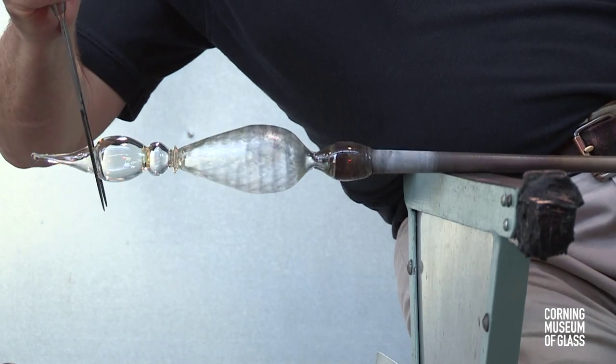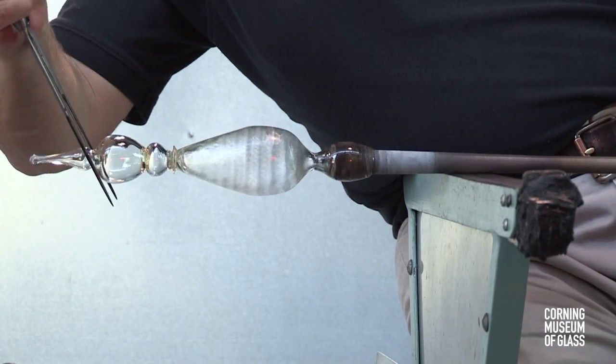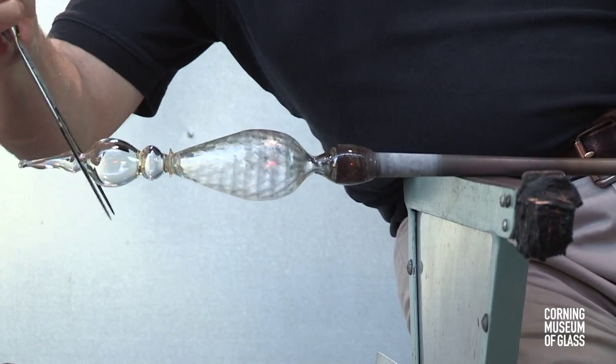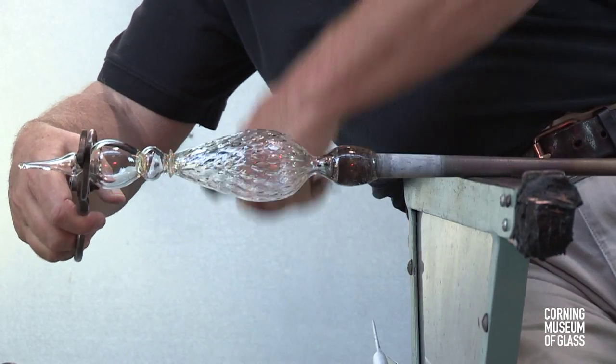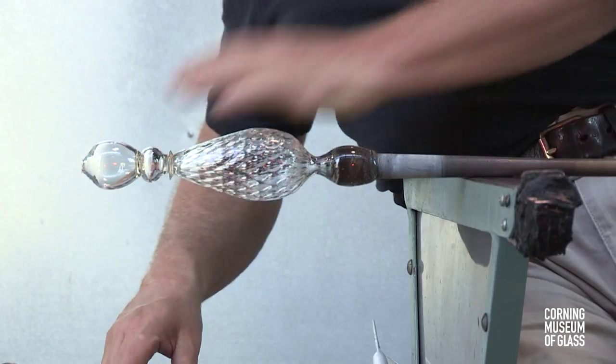A constriction is made, and this will allow the rim to be formed. Excess glass is broken away, leaving a hole.